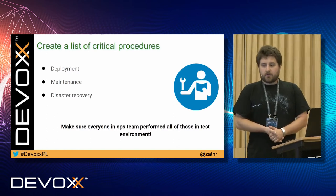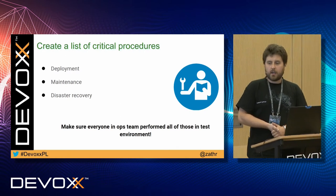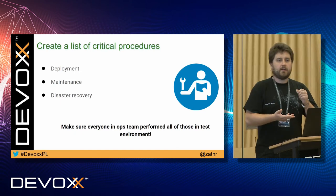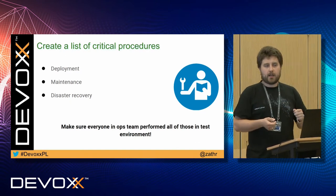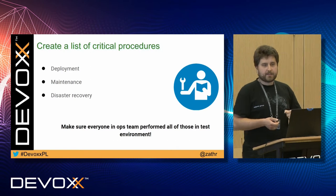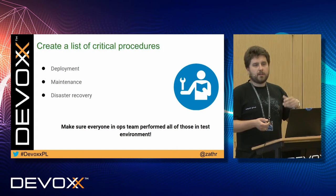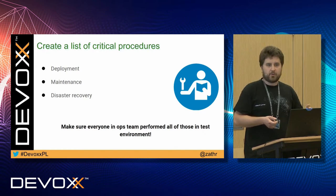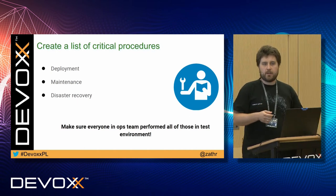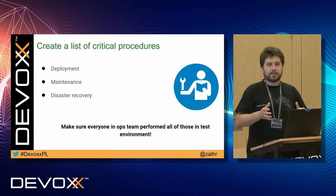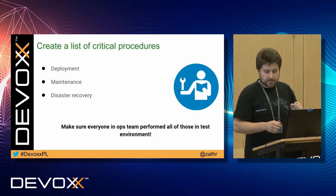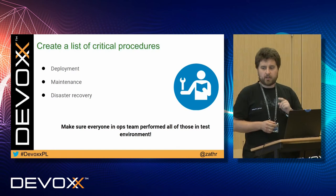Your next step should be creating a list of critical procedures. By that I mean deployment — creating a new application, deploying it, scaling it, deploying a new version, and so on. Maintenance — creating a cluster, scaling it, removing a node for maintenance, reconnecting it again. And disaster recovery — being prepared not only for a node failure, especially a master node failure, but also having some kind of backup solution. There are solutions that will allow you to backup your entire cluster as YAML files and put them in a Git repository. Make sure everyone on your team is trained to follow these procedures.